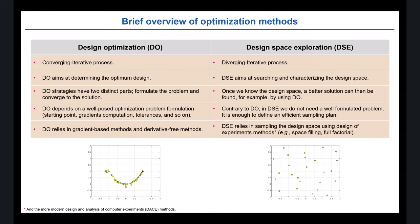A brief overview of optimization methods — I could talk about this for a whole month, but this is just an introduction. We can talk about design optimization and design space exploration. Design optimization I like to call the converging iterative process: we start from a point, then move in a space following some method — gradient-based, derivative-free, whatever — and arrive at the optimal value. Here your starting point is the green circle, and your final optimal solution is where you arrive. These methods are based on formulating a problem, which is very important.